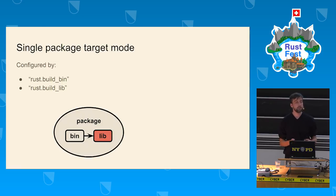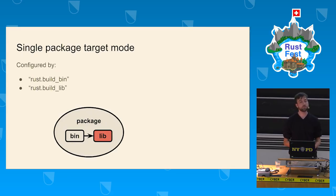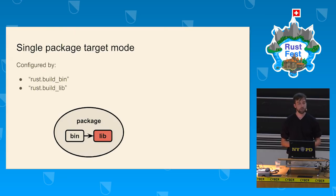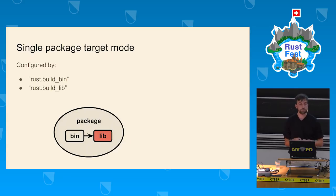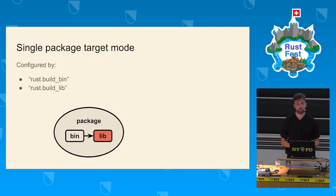In the previous mode, the RLS runs cargo first when analyzing a project and stores the final compiler invocation that cargo issued. You can configure this with the `rust.build_bin` and `rust.build_lib` options. Any LSP-supporting client that supports the configuration API will work, but currently only the Rust extension for VS Code exposes this.